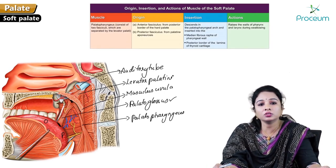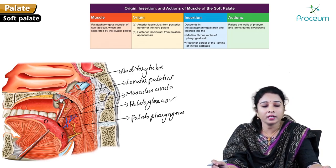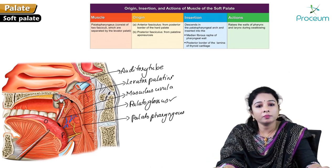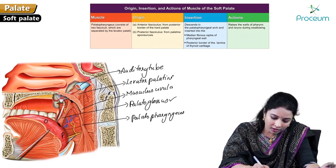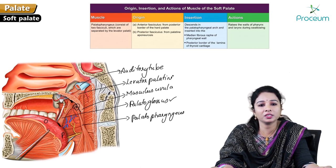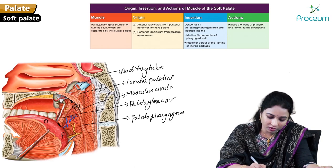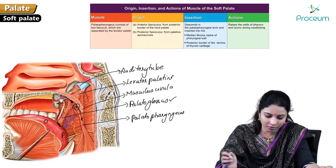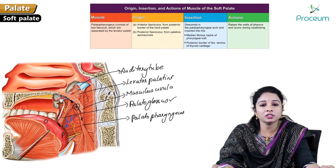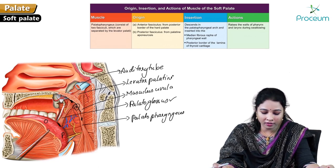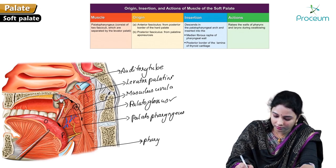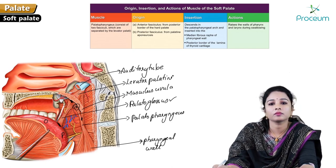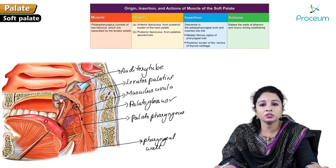The palatopharyngeus muscle consists of two fasciculi separated by the levator palatini. The anterior fasciculus originates from the posterior border of the hard palate, and the posterior fasciculus from the palatine aponeurosis. Both merge to form the palatopharyngeal arch, which inserts into the medial wall — the median raphe — of the pharynx. Its action is to raise the walls of the pharynx and larynx during swallowing.